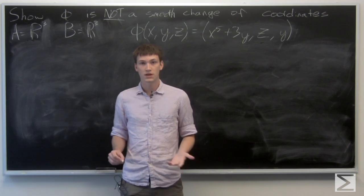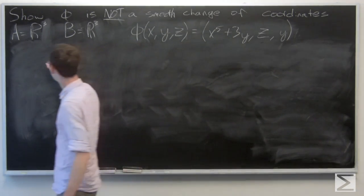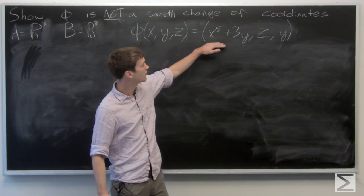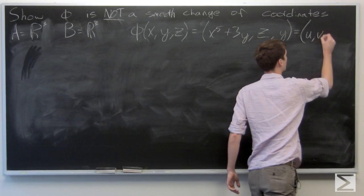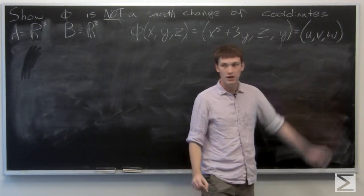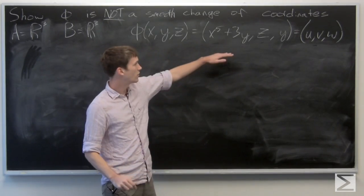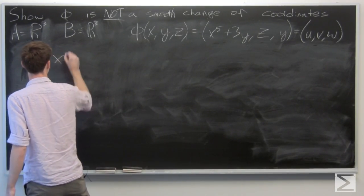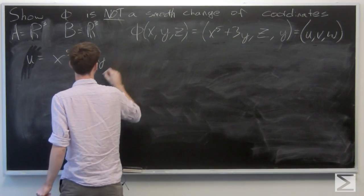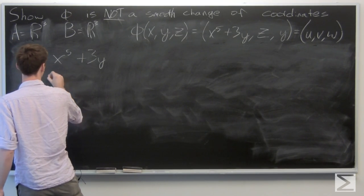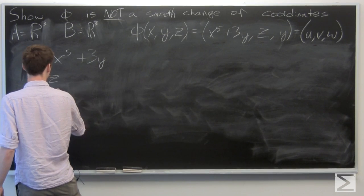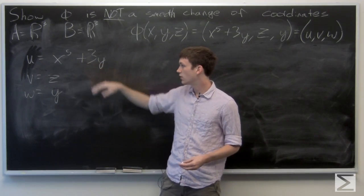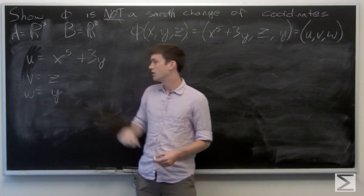So first we want to try and produce an inverse function to see if phi is a bijection. We'll do that by letting this be some point u, v, w in the codomain of R³. So we let u equal to x to the fifth plus 3y, v equal to z, and w equal to y.